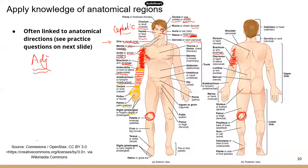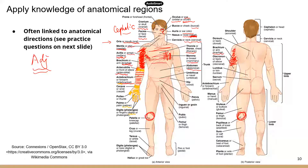On the anterior view, thoracic refers to the chest area. Mammary refers to the breast region. Abdominal refers to the anterior body trunk region inferior to the ribs — that's the area below the ribs. Umbilical, also known as the navel, is where your belly button is located. Coxal refers to the hip area.